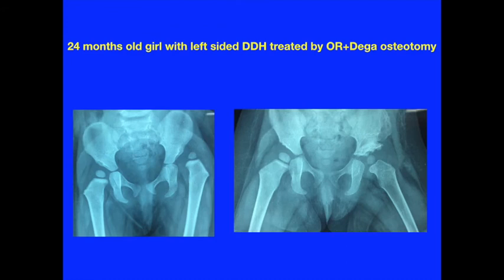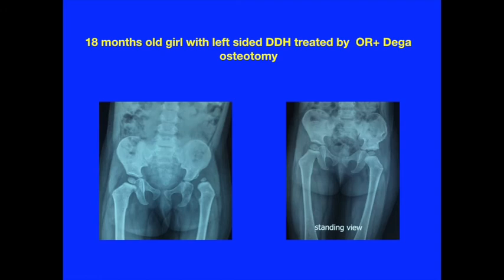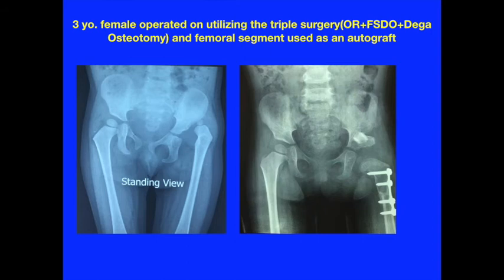We present three cases of Dega osteotomy with open reduction in the first two patients, aged 24 months and 15 months, and a third patient aged three years who underwent triple surgery including open reduction, Dega osteotomy, and femoral shortening derotation osteotomy.